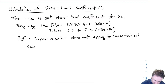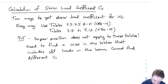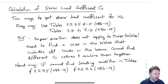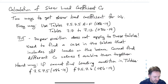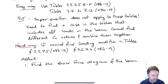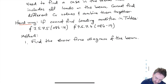If superposition doesn't apply and I can't find the exact loading condition in one of those tables, I have to calculate CV the hard way. That's not that bad — I'll put out the method step by step with an example. The first step is to find the shear force diagram, and then use that actual shear force diagram to calculate what CV should be.